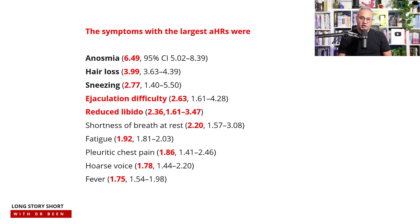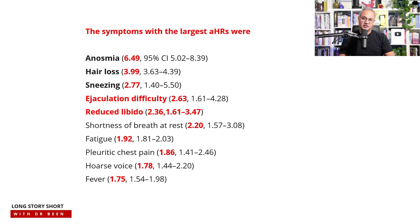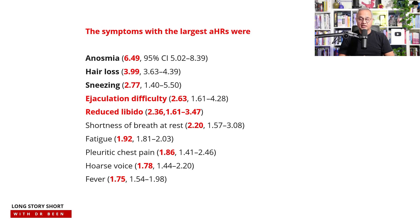For clinicians, this summary page is very important. Anosmia is the largest risk factor: patients who had anosmia had a 6.49 times higher likelihood of developing long COVID. The study defined long COVID as symptoms persisting three months or more after infection, with or without resolution in between. Hair loss was associated with a 3.99 times higher likelihood.